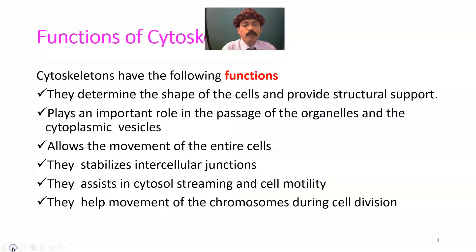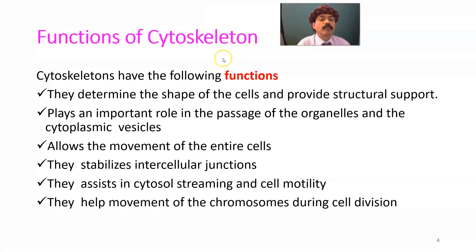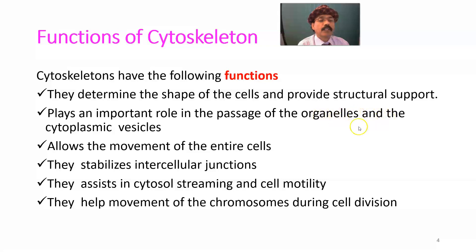Now we will discuss the functions of the cytoskeleton. Cytoskeleton has many functions. They determine the shape of the cell and provide structural support — the shape of the cell is not permanent and may change according to demand. The cytoskeleton plays an important role in the passage of organelles such as mitochondria, free ribosomes, the Golgi apparatus, and cytoplasmic vesicles. It is very important for endocytosis and exocytosis.